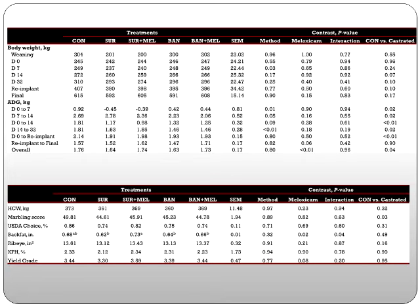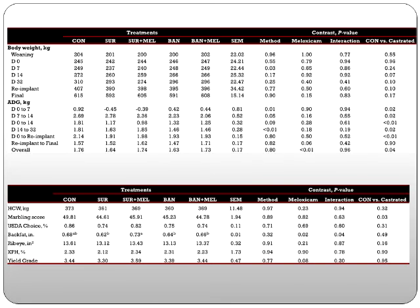In the carcass data, hot carcass weight was greater for the steers — the control group — and we also found a difference in back fat thickness between the groups.